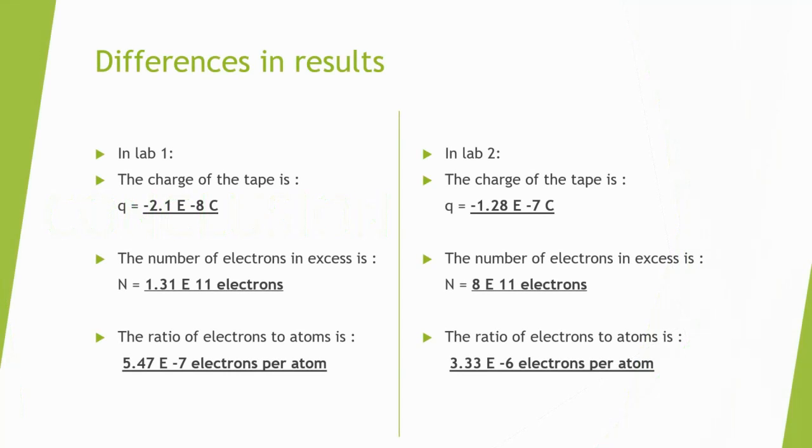The values found in lab 1 and lab 2 were radically different, where all the values in lab 2 were greater than those of lab 1. In lab 1, the charge of the tape was negative 2.1 times 10 to negative 8 coulombs, the number of electrons was 1.31 times 10 to 11 electrons, and the ratio of electrons to atoms was 5.47 times 10 to negative 7 electrons per atom. In lab 2, however, the charge of the tape was negative 1.28 times 10 to negative 7 coulombs, the number of electrons in excess was 8 times 10 to 11 electrons, and the ratio of electrons to atoms was 3.33 times 10 to negative 6 electrons per atom.